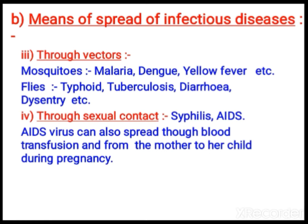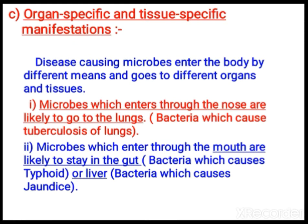Next — organ specific and tissue specific manifestations. Disease-causing microbes, when they enter the body, go to different organs and focus on a particular tissue or organ and damage it. For example, in tuberculosis, microorganisms infecting the lungs enter through the nose and go to the lungs. Common cold, pneumonia, tuberculosis, and even COVID virus attack the lungs. Malfunctioning of the particular organ occurs and can result in death according to the severity of the attack.